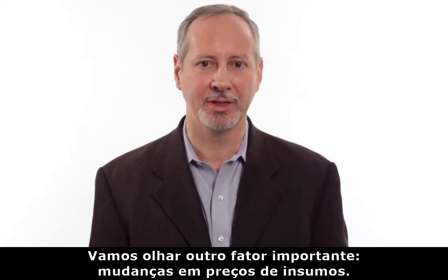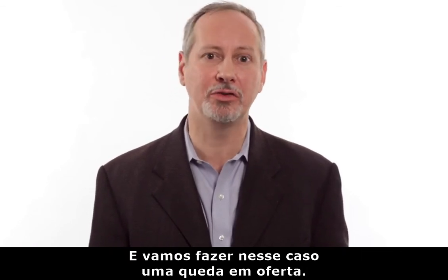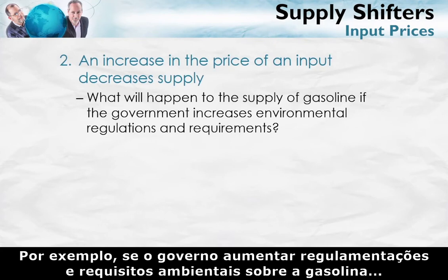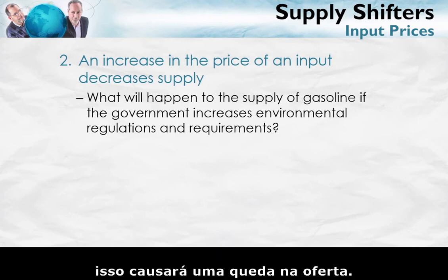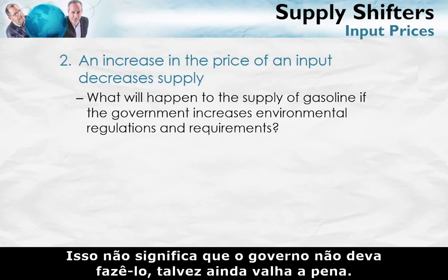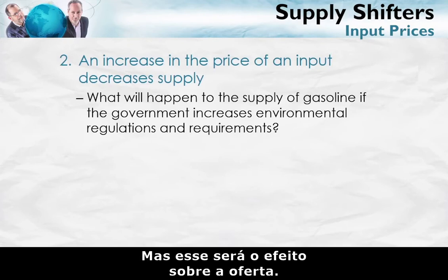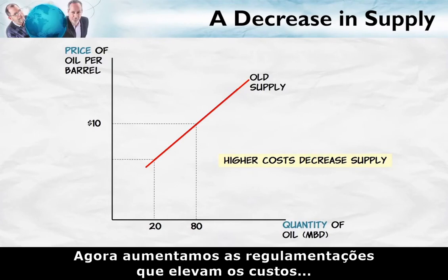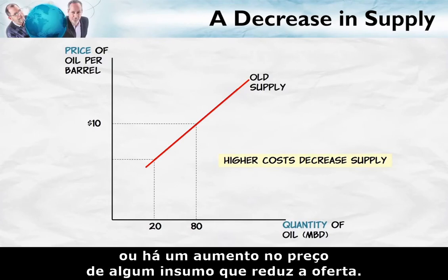Let's look at another important supply shifter: changes in input prices — and this time a decrease in supply. An increase in the price of an input will decrease supply. For example, if the government were to increase environmental regulations and requirements on gasoline, that's going to cause a decrease in supply. It doesn't mean the government shouldn't do that — maybe it's worthwhile — but that will be the effect on supply. Here's the old supply curve; with increased rules and regulations, costs rise and supply decreases.